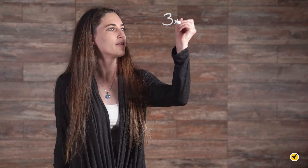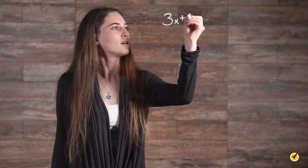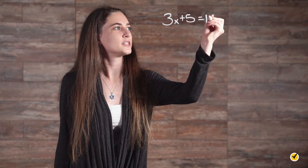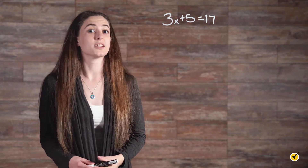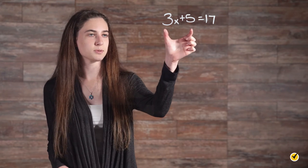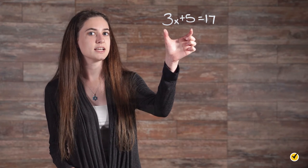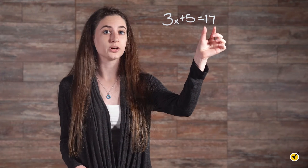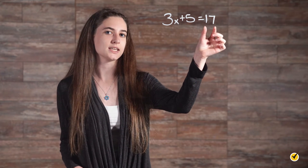For example, when looking at 3x plus 5 equals 17, what is on the left side of the equation, 3x plus 5, is equal to what is on the right side of the equation, 17.